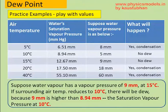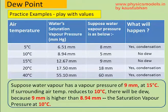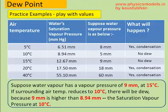Let's play with some values to be more clear. In this chart the first column shows temperatures: 5, 10, 15, 20, and 40 degrees centigrade. The second column shows the saturation vapor pressure for each temperature — these are fixed and cannot be changed. For example, at 5°C it is 6.51 mmHg, at 10°C it is 8.94 mmHg, at 15°C it is 12.67, and at 20°C it is 17.5 mmHg.